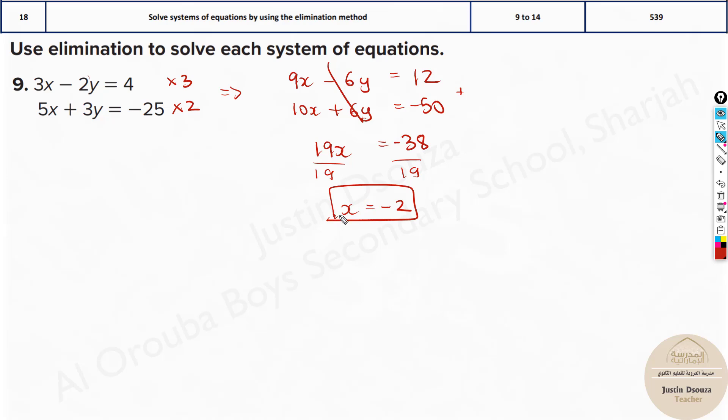Now how do we find the other value? Just substitute this back in the simpler equation. You can do it in any, but see the first equation is simple, right? Small numbers. This has big numbers, but you will get the same answer. I will do for both in this case.